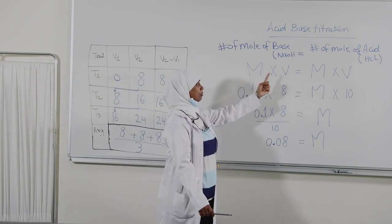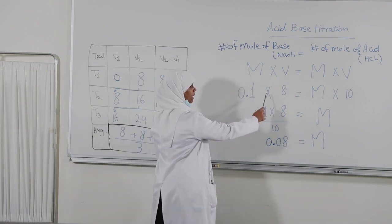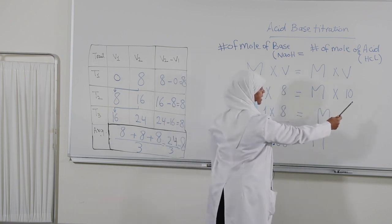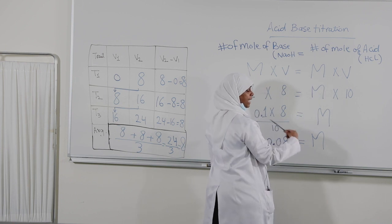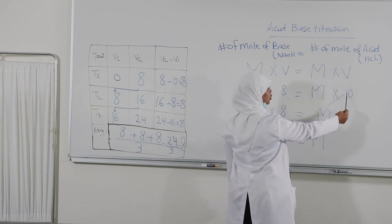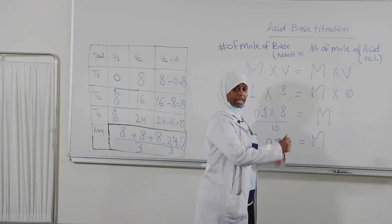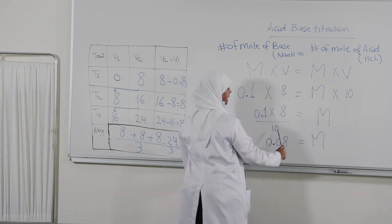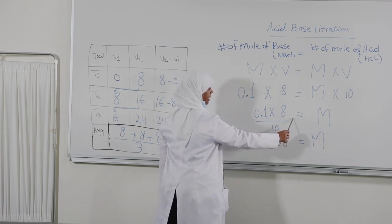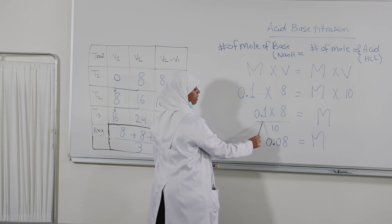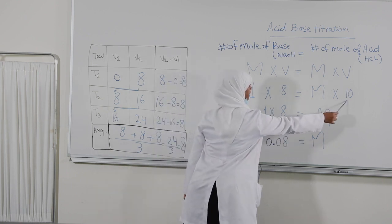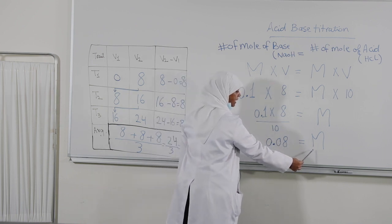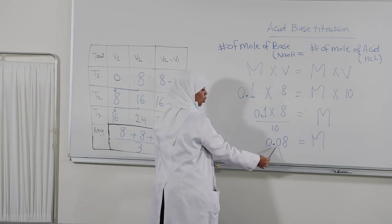The molarity of the base is known, the volume taken from the table (average of three trials) is 8 mL, and we multiplied 0.1 M by 8. The volume of HCl taken was exactly 10 mL. Therefore: Molarity(HCl) = (0.1 × 8) / 10, which gives a molarity of HCl = 0.08 M.